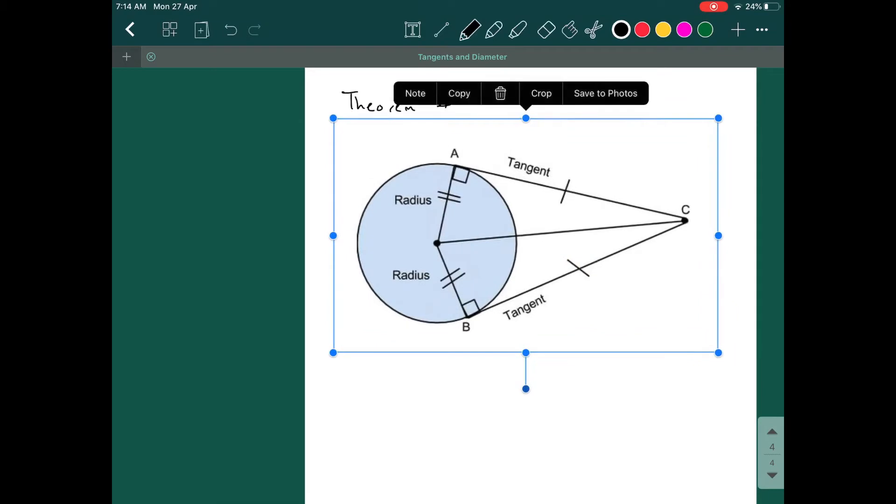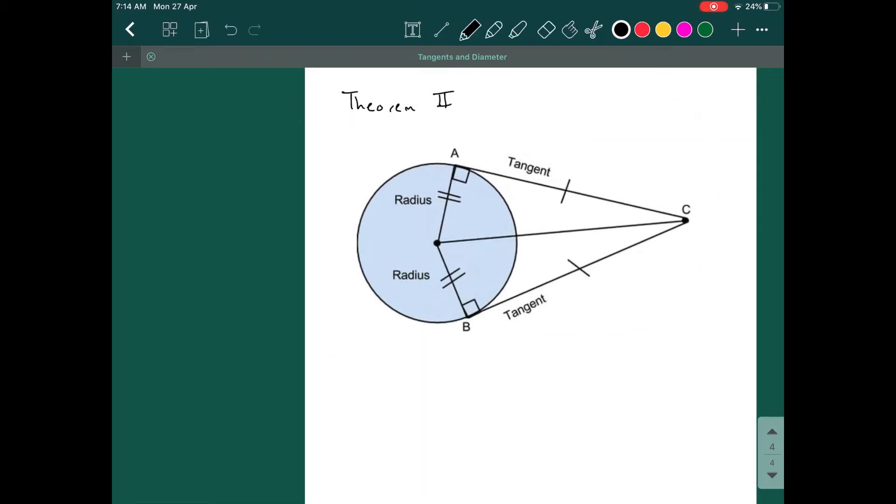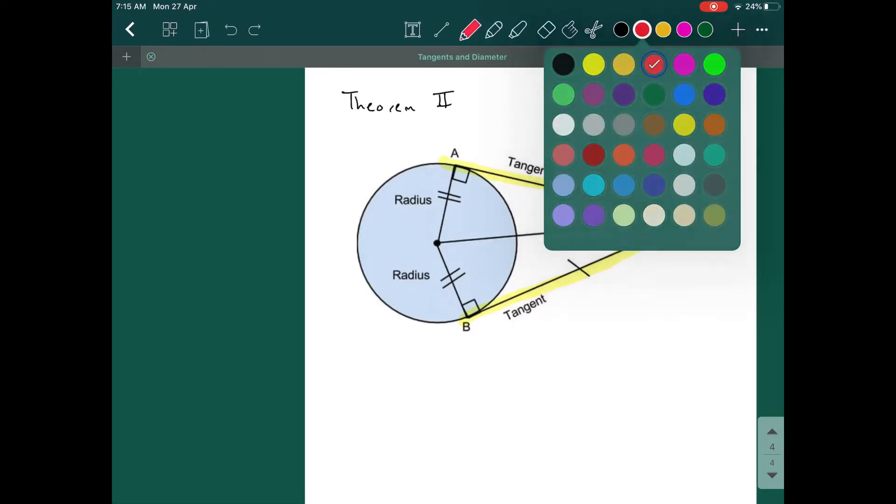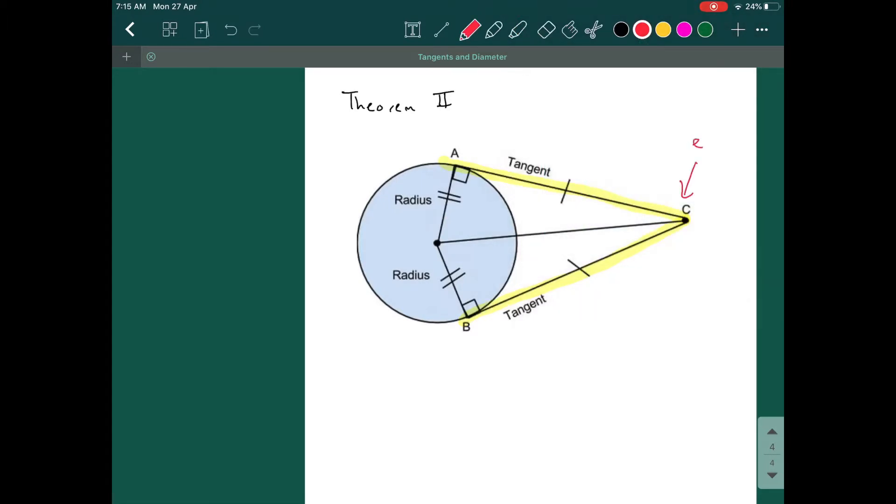If you have two tangents on this circle, the one I highlighted is tangents and it connects to one point outside. We call this as external point.